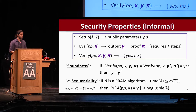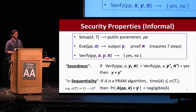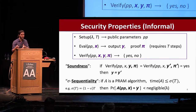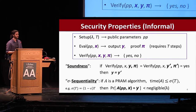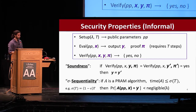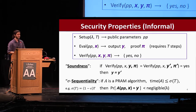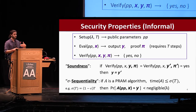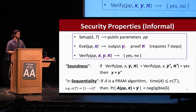In terms of security properties, soundness captures uniqueness — for any given input x, there is a unique output y for which an adversary can produce a correct proof accepted by verify. Sigma-sequentiality captures the delay property, where sigma(t) is strictly less than t — say (1 minus epsilon)·t for some small constant epsilon. If a PRAM algorithm runs in time less than sigma(t), it cannot compute the correct output y on a given input x with probability greater than negligible in lambda. We'll define this more formally through a game in a few slides.